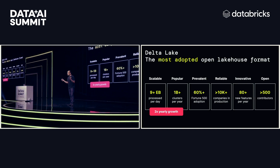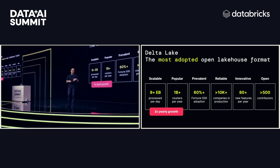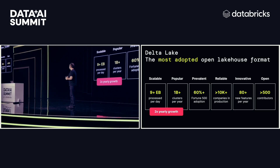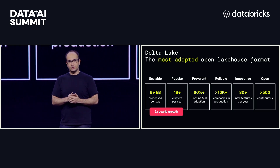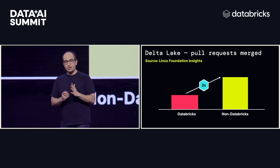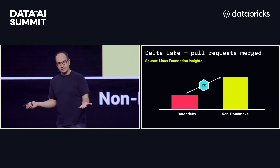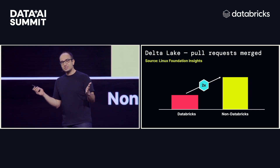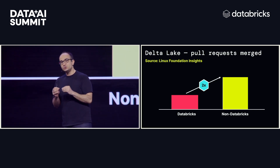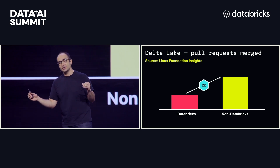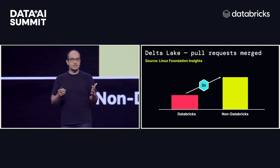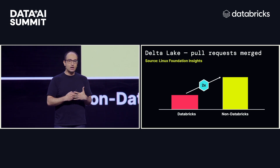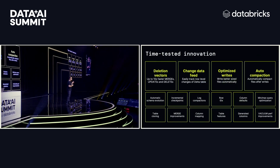Delta is adopted by a large percentage of the Fortune 500, 10,000 plus companies in production, with lots of new features. Most interestingly, there are over 500 contributors. According to the Linux Foundation — and this is their project analytics site, open for anyone to visit today — over 66% of contributions to Delta come from companies outside of Databricks. It's this community that makes us super excited and enables a ton of these features.